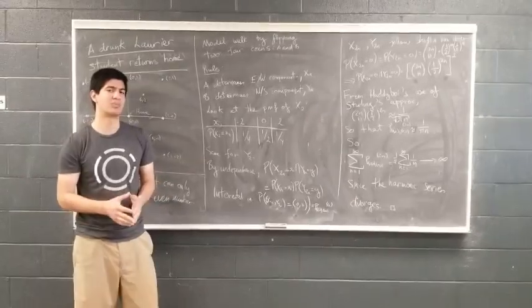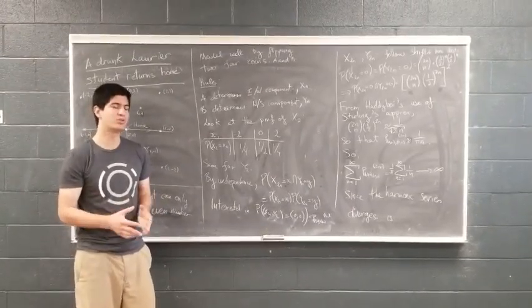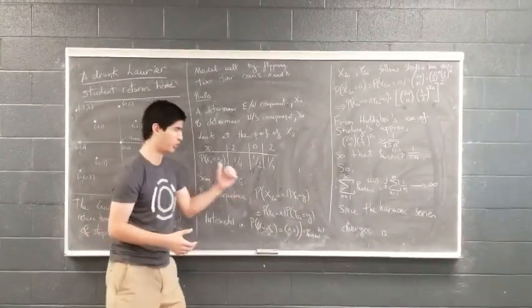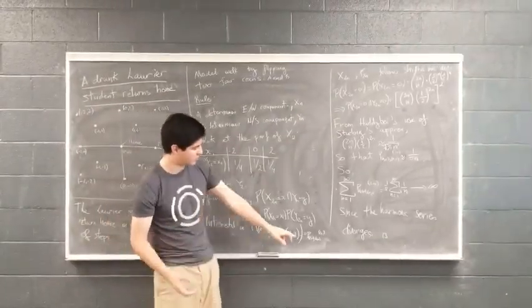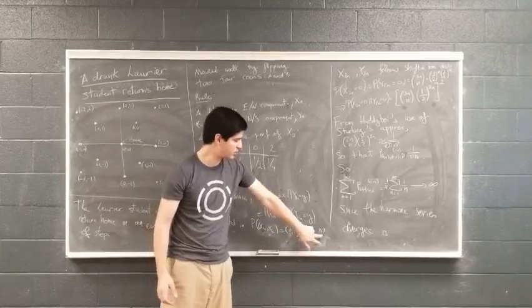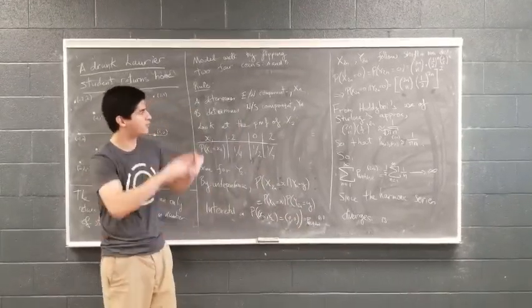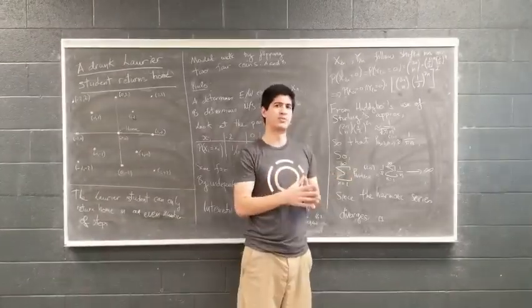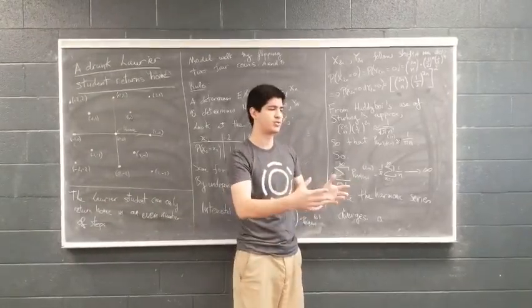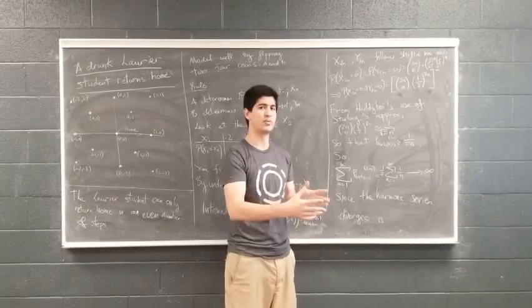We're actually interested in the probability of the Laurier student returning to the origin, modeling here his home, after an even number of tosses, which we denote as p_{0,0}^{2n}. Like in the previous problem, the distribution after 2n tosses is a binomial distribution.